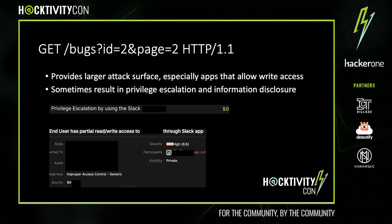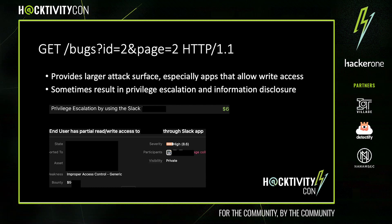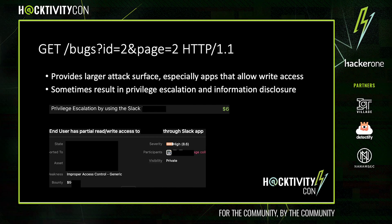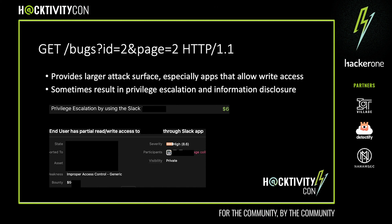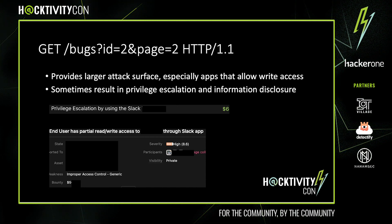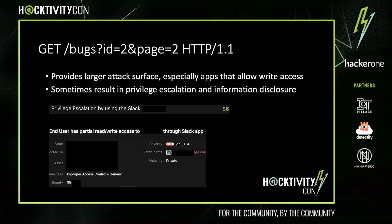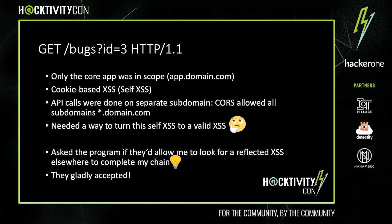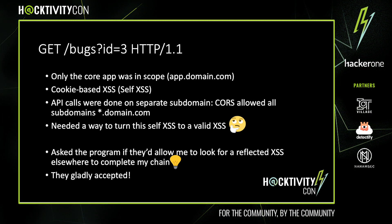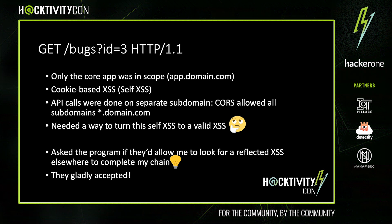So with my third bug, only the main application was in scope. I had a cookie-based XSS, which of course is a self-XSS. I also noticed that all API calls were done on a separate subdomain, but CORS was configured to allow all subdomains to interact with it. Which meant that if I could make this self-XSS be a valid XSS, I'd be able to leak data from the API. However, I didn't find a way to do so — I couldn't find any XSS on the in-scope application at all. I knew that if I could find XSS on a separate subdomain, my chain would work. I simply asked the program if I could look for an XSS on a separate subdomain. Luckily, they accepted, and a few hours later I finally found an XSS and was able to complete my chain and leak data from the API.